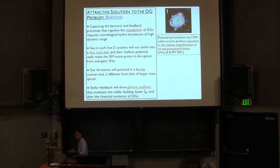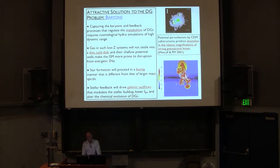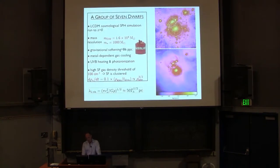That's not what we see in more massive systems, so you would expect, once you disrupt the ISM with supernovae, the star formation to be bursty. You expect stellar feedback to drive galactic outflows that will modulate the stellar buildup, the gas fraction, and alter the chemical evolution of your systems, and all of this must be put into your computer in some way or the other.